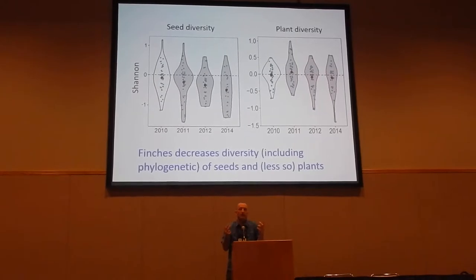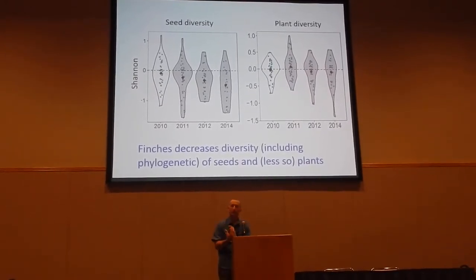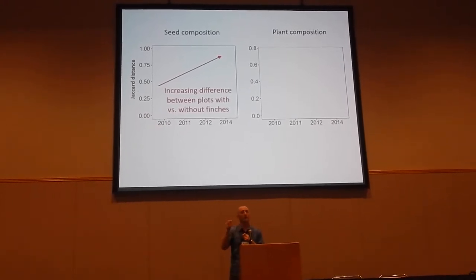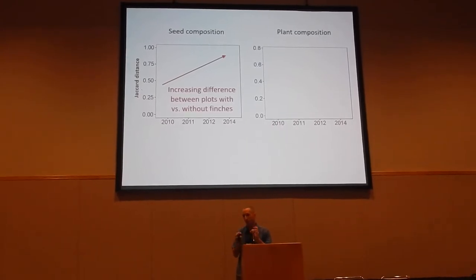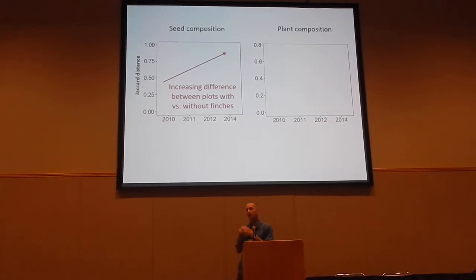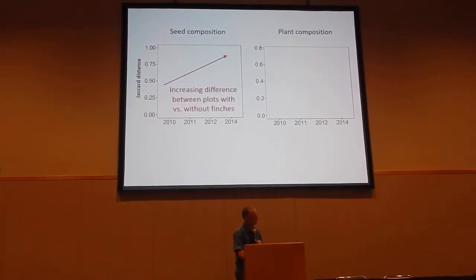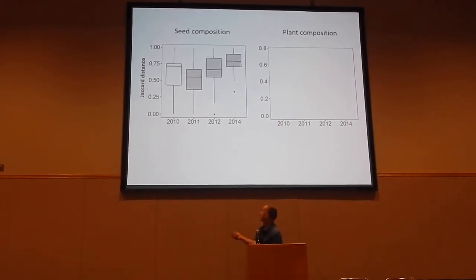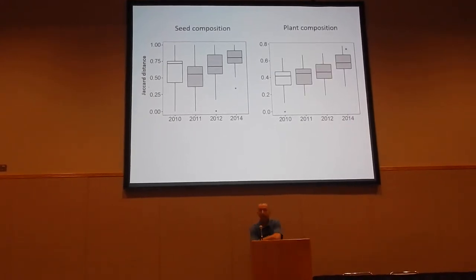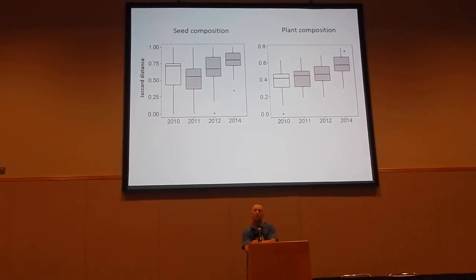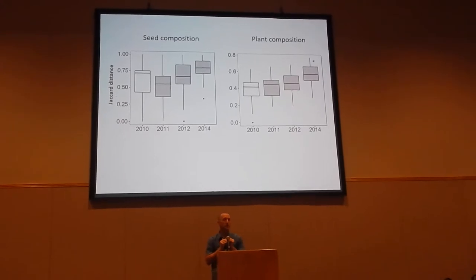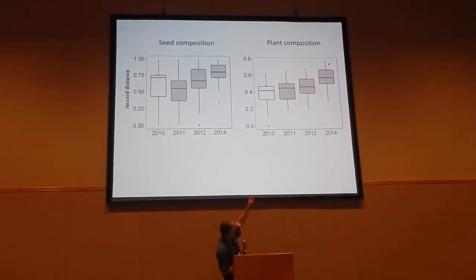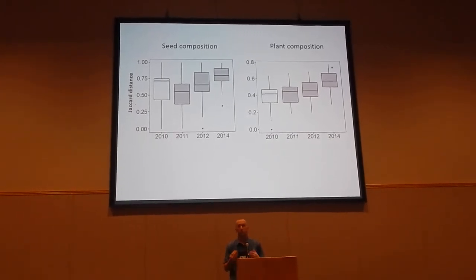Diversity is a nice metric, but finches could also be shaping the composition within a given diversity level. We looked at whether seed composition was increasingly diverging between control plots and finch-exclosure plots over time. If finches are shaping species composition, you should see an increasing divergence through time between exclosures and control plots — and that does appear to be the case for seed composition. Variation between years is driven largely by rainfall, but correcting for that shows even stronger trends. There also seems to be an effect on plant species composition, though the signal in emerging plants only appears after a relatively long period, presumably because of seed bank effects.